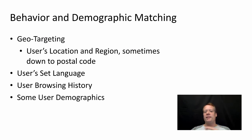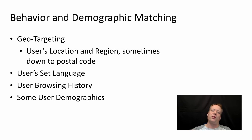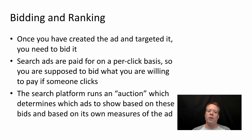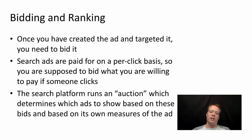Besides keyword phrases, you can also do behavioral and demographic matching. You can do geotargeting — targeting users' location and region, sometimes even down to the postal code. You can target their set language, their browsing history in some cases, and some user demographics. Once you put all that together, Google is going to consider your ad with those targeting rules plus a bid to determine how to place your ad.